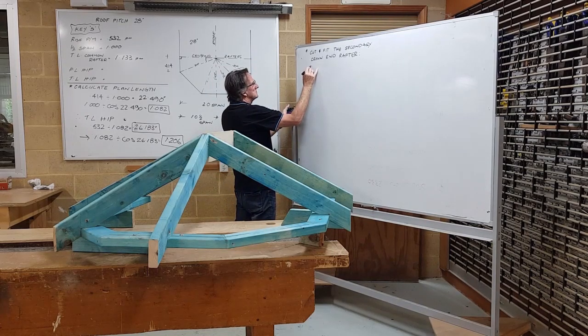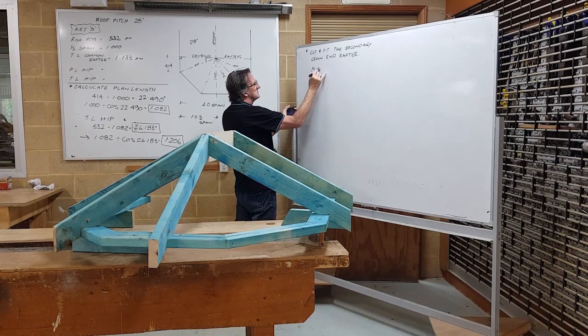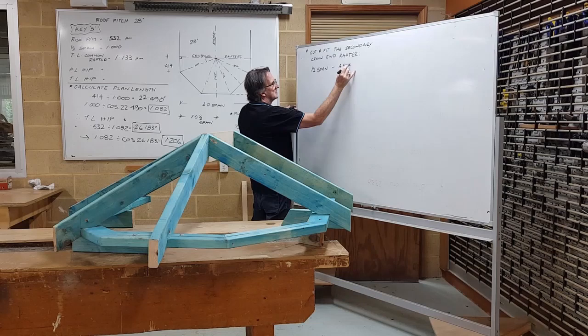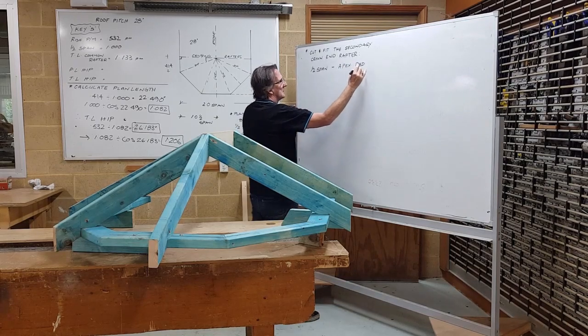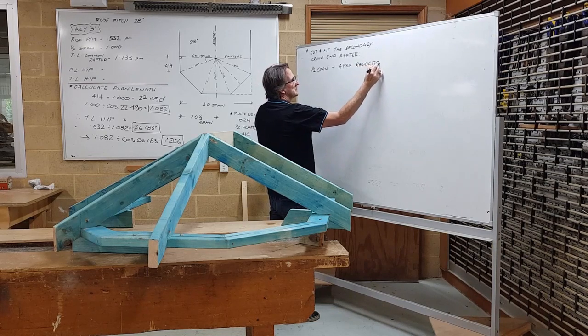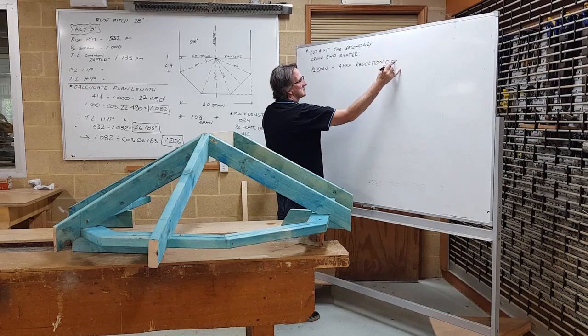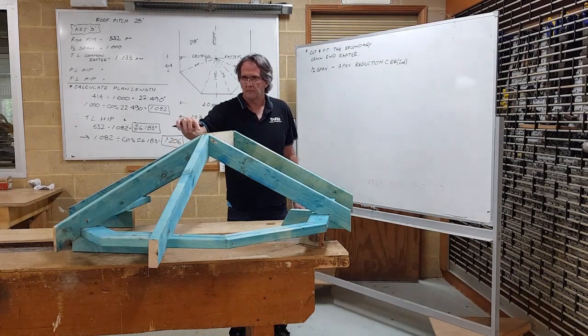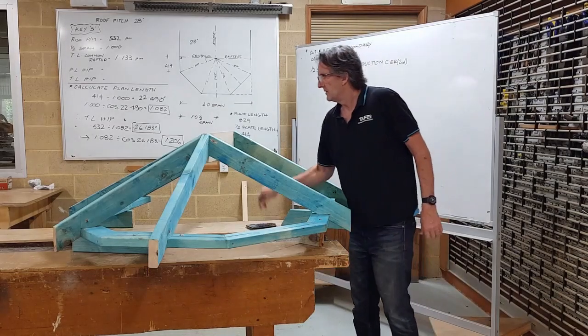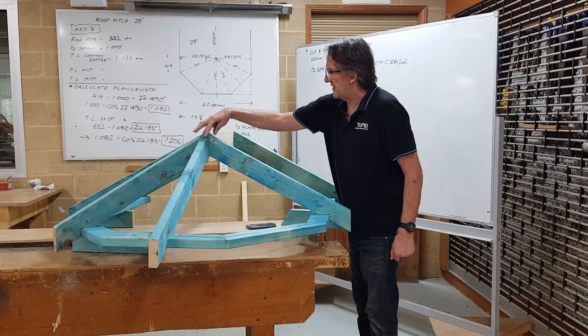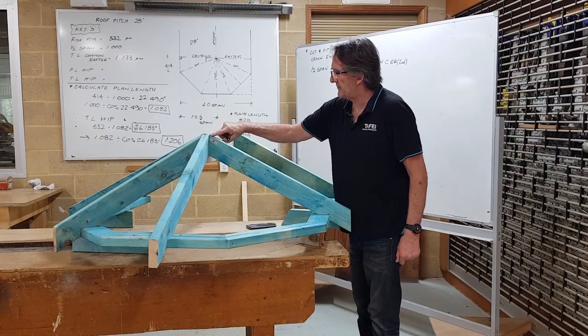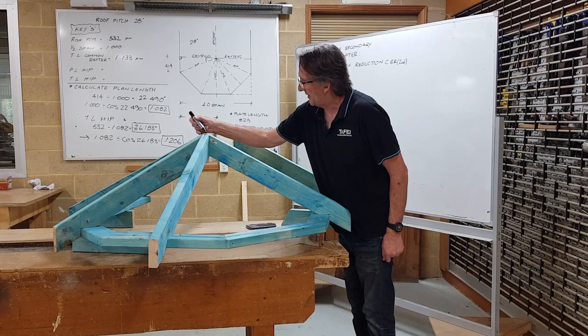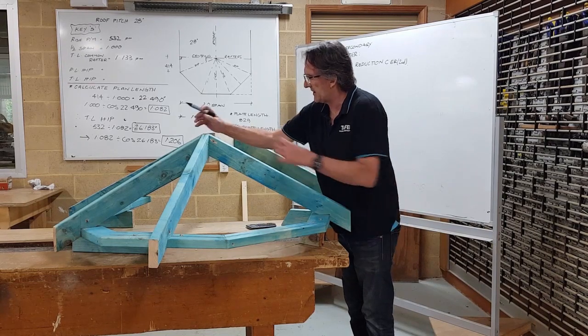I'm going to take the half span of my job, I'm going to subtract the apex reduction for the secondary crown end rafter. The apex reduction is the distance from the centerline set out of the apex cluster to the point where the secondary crown end rafter is going to hit it. This one's already in and you can see I need the horizontal distance from that centerline point to where the component is going to slot into the connection detail of the apex.